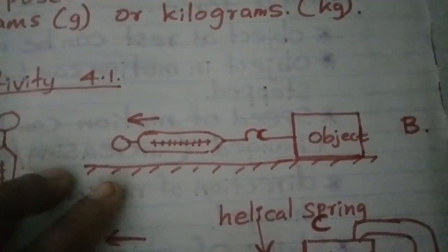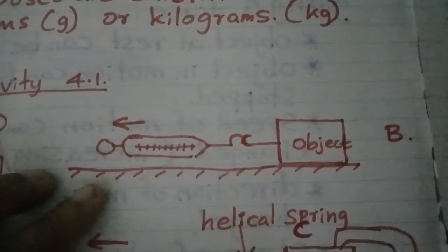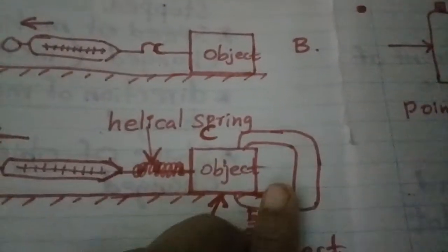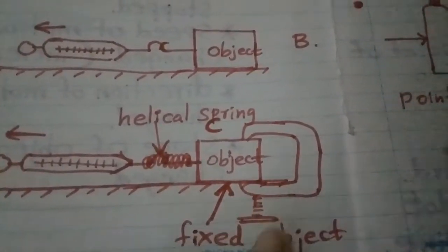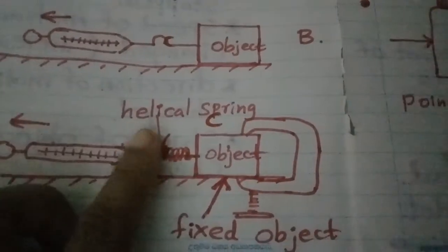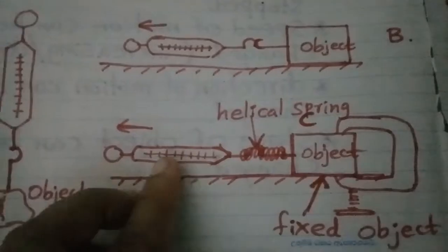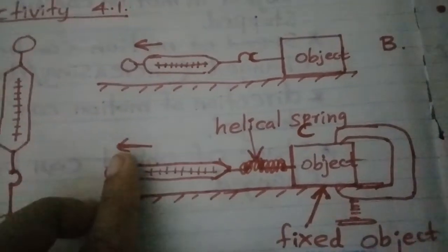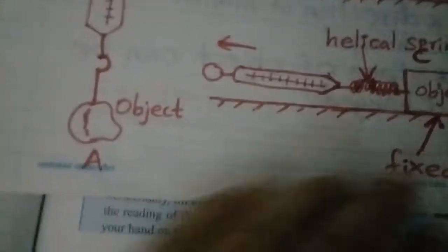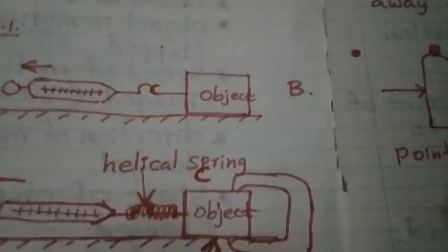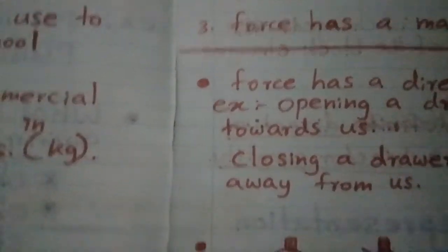In setup A, the object is placed horizontally and we are pulling it to find the force. In setup B, the object is clamped and fixed, with a helical spring and a Newton balance attached, and we pull to one side. In setup C there is another configuration. Now, do you think the three forces measured are the same or different?